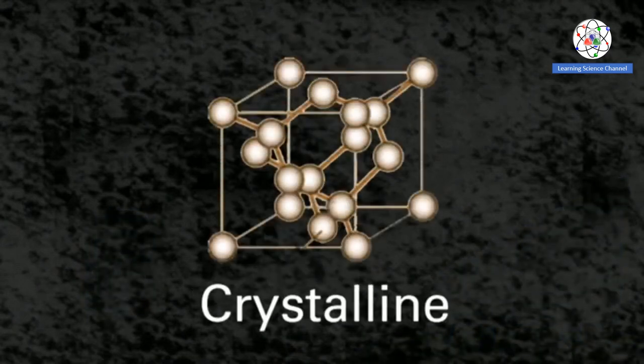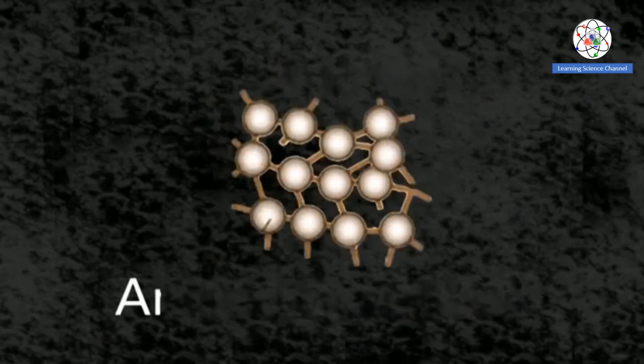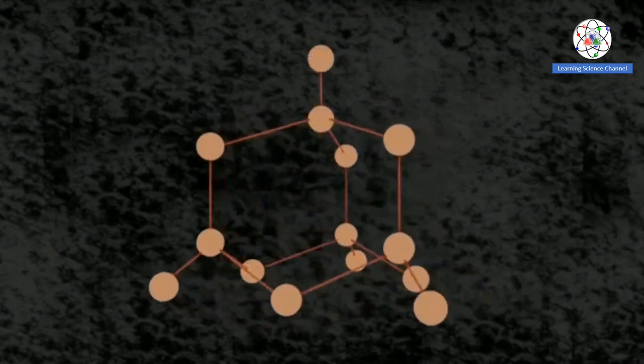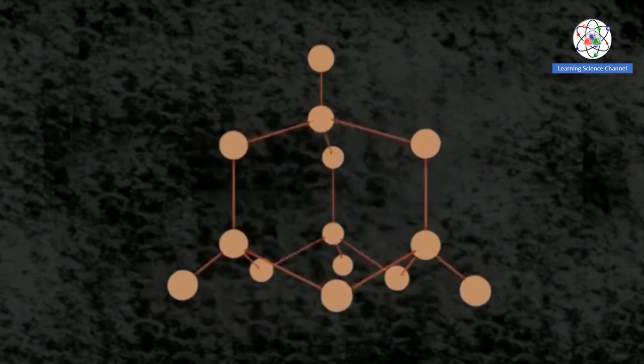Silicon exists in crystalline form and in non-crystalline form, also known as amorphous silicon. In crystalline silicon, silicon atoms are arranged in a tetrahedral structure, with each atom covalently bound to four other atoms.